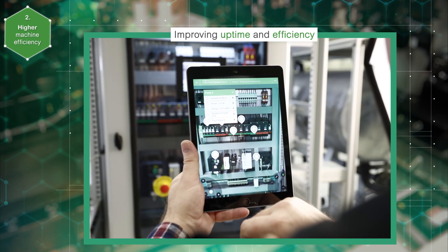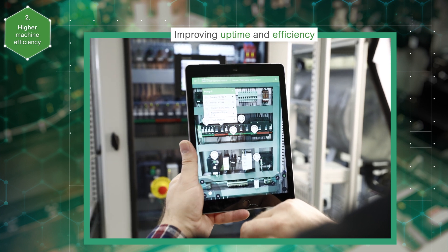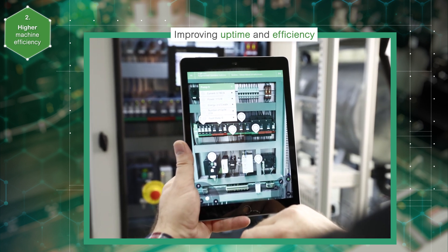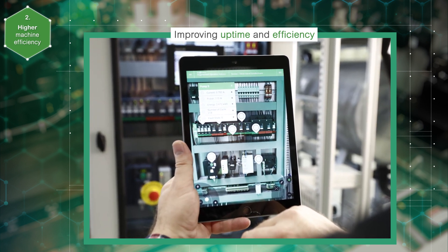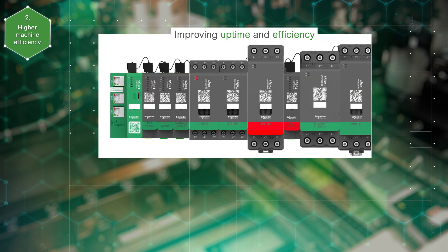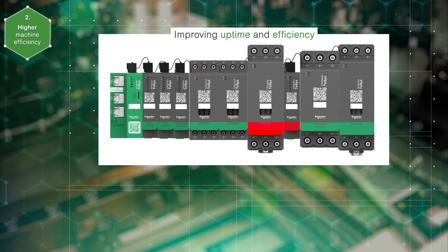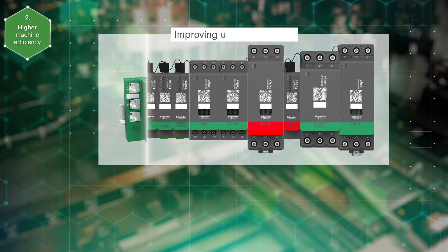With the relevant information specific to each load, it is easier to locate an issue and find a root cause. In case of device failure, with the QR code you can easily order a new part and replace it without doing new configuration — that reduces the downtime.